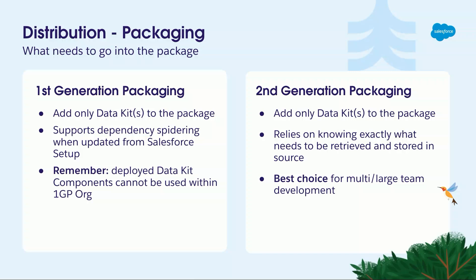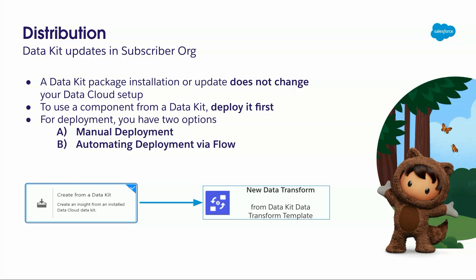Now we have our package and we released it. What's really important to repeat: after you install a package containing a standard data kit, there is nothing changing in your org at first. So there will be no additional consumption prices or additional costs, because you are in control. You need to deploy components first, and to deploy components you have basically two options. One is manual deployment, which we'll be demoing in a minute, and there's automated deployment now since August via Flow.